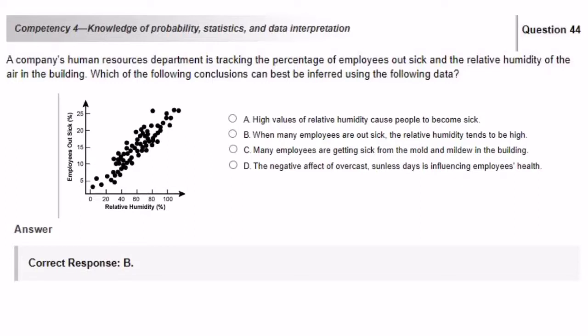A company's human resources department is tracking the percentage of employees out sick and the relative humidity of the air in the building. Which of the following conclusions can be best inferred using the following data? Before looking at our answers, let's look at the graph. It is a scatter plot. What I can conclude by looking at the graph, as the relative humidity increases, so does the number of employees out sick.